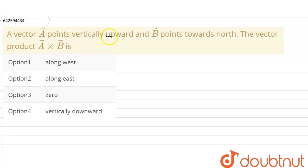So our question is: a vector A points vertically upward and B points towards north. The vector product A cross B is along west, along east, zero, or vertically downward.